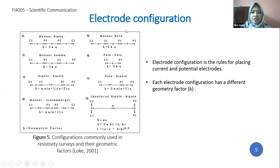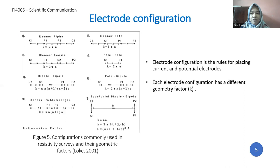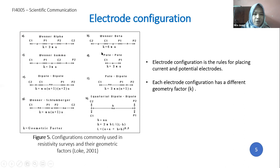Electrode configuration is the arrangement for placing current and potential electrodes to obtain a certain measurement pattern with a specific objective. Each configuration has a different geometry factor — a modifier factor to obtain a stable resistivity value. Commonly used configurations include Wenner alpha, Wenner beta, Wenner gamma, Pole-Pole, Dipole-Dipole, Pole-Dipole, Wenner Schlumberger, and Equatorial Dipole-Dipole.